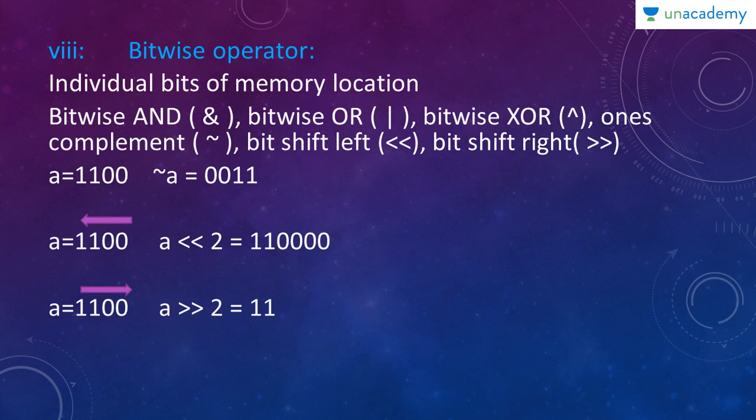Next type of operator is a bitwise operator. It is used in individual bits of memory location. We have bitwise AND, bitwise OR, bitwise XOR, one's complement, bit shift left and bit shift right. Bitwise AND is AND of two numbers, bitwise OR is OR of two numbers and XOR is the XOR of two numbers. One's complement is something different. Let us take an example if a is 1100 one's complement will be the complement of that. Instead of one you'll have a zero and instead of zero you'll have a one. Hence 1100 changes to 0011. And then if you have a bit shift left that is for a equals to 1100 you shift the elements towards the left. Hence once you shift it twice you add two zeros onto its right by shifting the element towards its left. Similarly you have bit shift right that is shifting the number towards its right by adding zeros on its left.